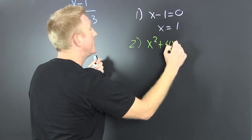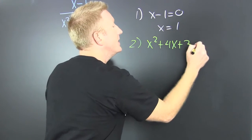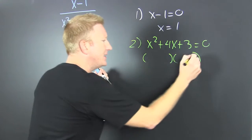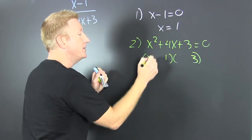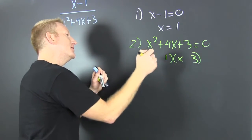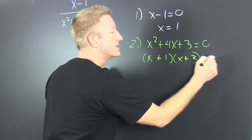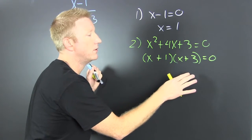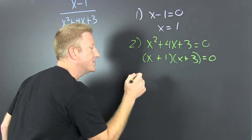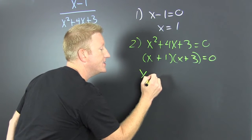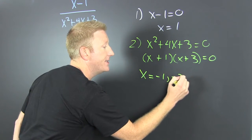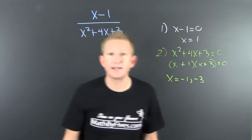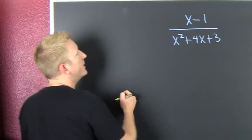Step two: I set the denominator equal to zero. I get x² + 4x + 3 = 0. I factor — I'm looking for factors of 3 that add to 4: that's 3 and 1. So x = -1 and x = -3. Those are our vertical asymptotes.